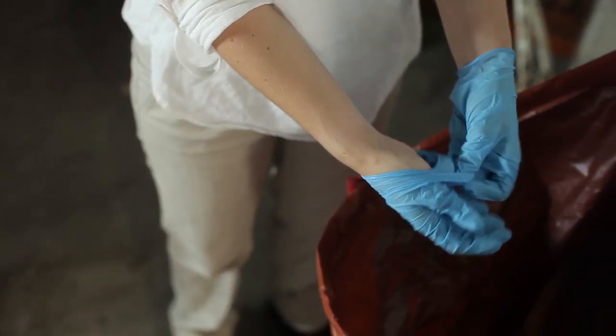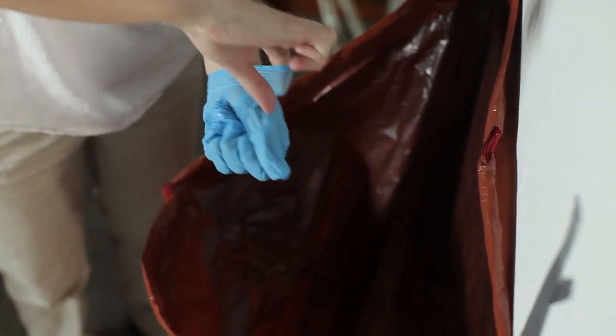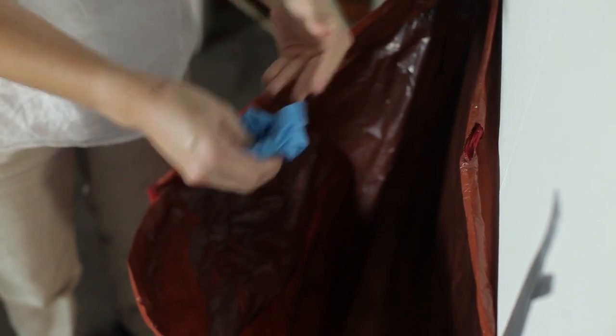When removing your gloves, grasp the palm of one glove near your wrist and carefully peel it off, turning it inside out. Do the same for the second glove and place both into the waste bag. Then, clean your hands with wet wipes and safely dispose of them into the bag.